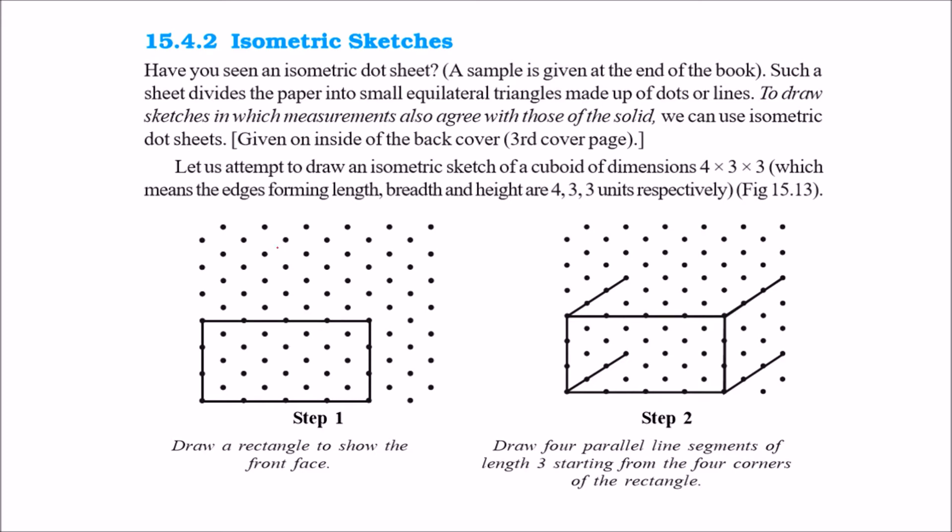In isometric sketches, these are dotted lines. If you want to draw sketches in which the measurements also agree with those of the solid, then you have to use the isometric sheets. If you use the oblique sketch, then the side may or may not match.